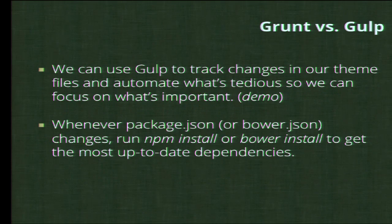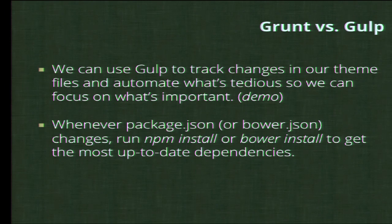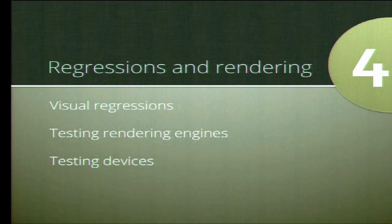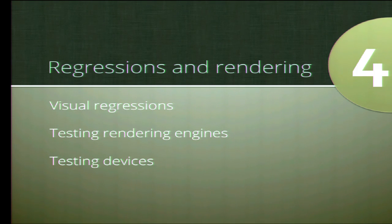We can use Gulp to track changes in theme files and automate what's tedious so we can focus on what's important. Whenever package.json or bower.json changes, you want to run 'npm install' or 'bower install' to get the most updated dependencies. Now let's talk about some tools that may not be so familiar to everybody.